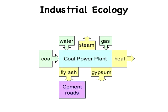This is where industrial ecology comes into play. For example, we could take the waste fly ash from a coal power plant and use it to build cement roads. We could also take the gypsum and use it for building materials, for example drywall.